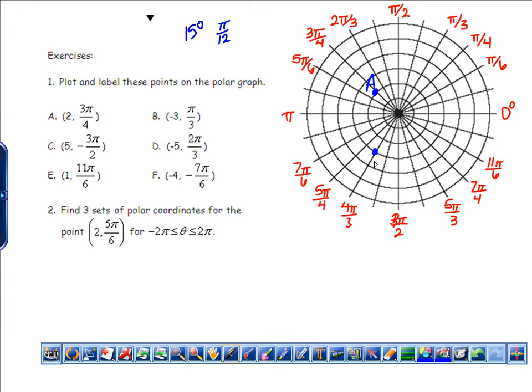And so again, there's lots of different ways to write the same point. We didn't have that in rectangular, but we do have it in polar. The next one, C, (5, -π/2). So this is a negative angle. So negative angle, we actually go clockwise from the polar axis. And so that puts us up at π/2, and then we would go 1, 2, 3, 4, 5 units away. And so there's C.